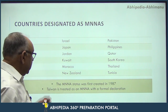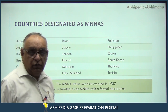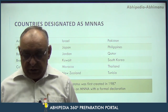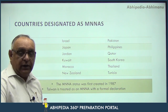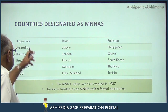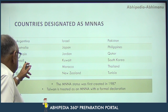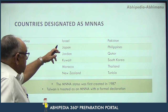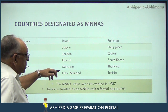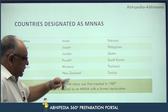As of today, there are eighteen countries of the world which are enjoying the Major Non-NATO Ally status of the US. Those countries are: Argentina, Australia, Bahrain, Brazil, Colombia, Egypt, Israel, Japan, Jordan, Kuwait, Morocco, New Zealand, Pakistan, Philippines, Qatar, South Korea, Thailand, and Tunisia.